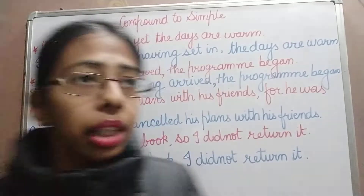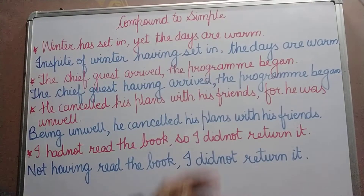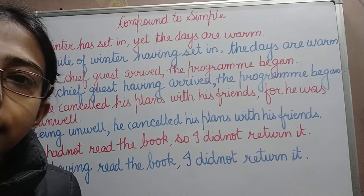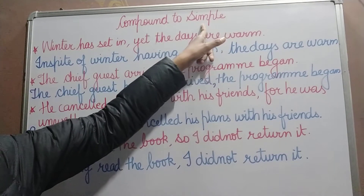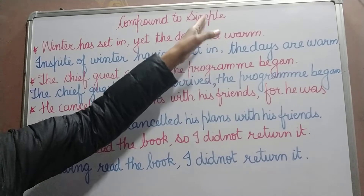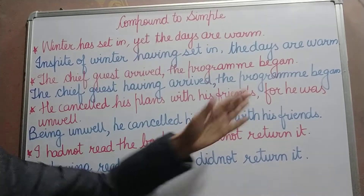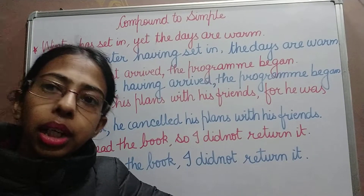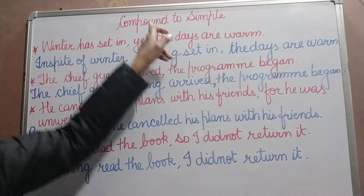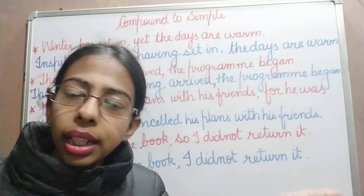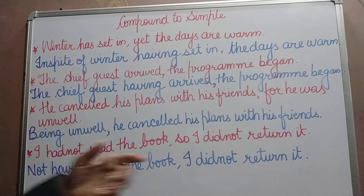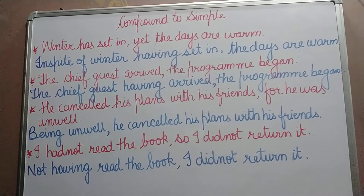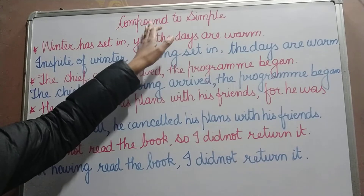Dear students, we previously converted simple sentences to compound sentences — from one independent clause we converted it into two independent clauses joined with a coordinating conjunction. Compound sentences use coordinating conjunctions and complex sentences use subordinating conjunctions. Now we are doing the vice versa — we will change a compound sentence into a simple sentence.